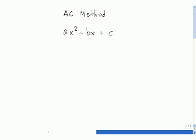The AC method is a technique used to minimize the trial and error involved in factoring a trinomial of the form ax squared plus bx plus c.